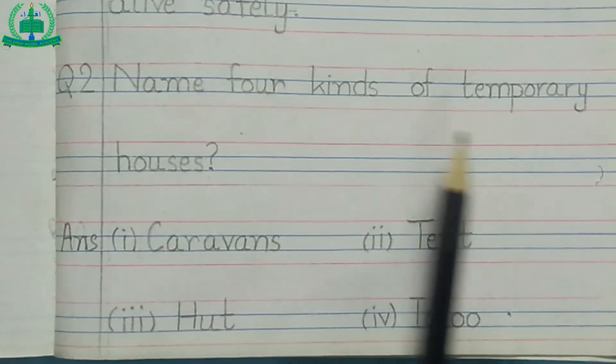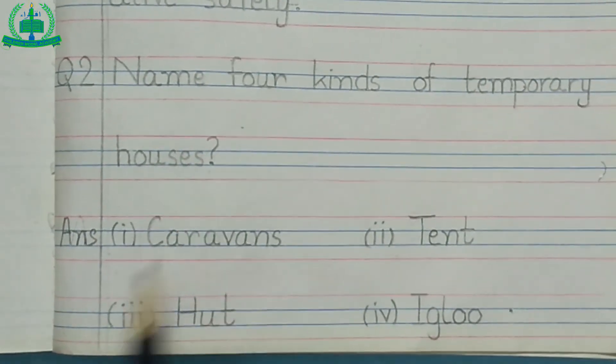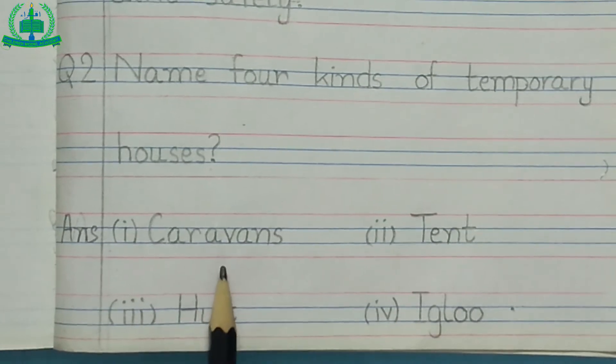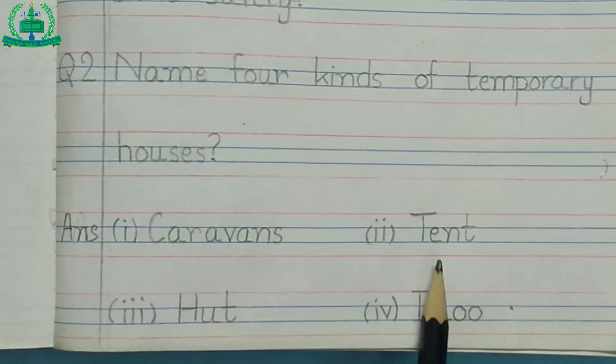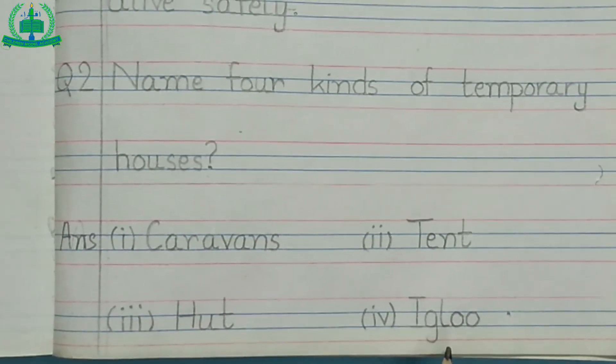Question number 2: name 4 kinds of temporary houses. Answer is: caravans, tent, hut, igloo.